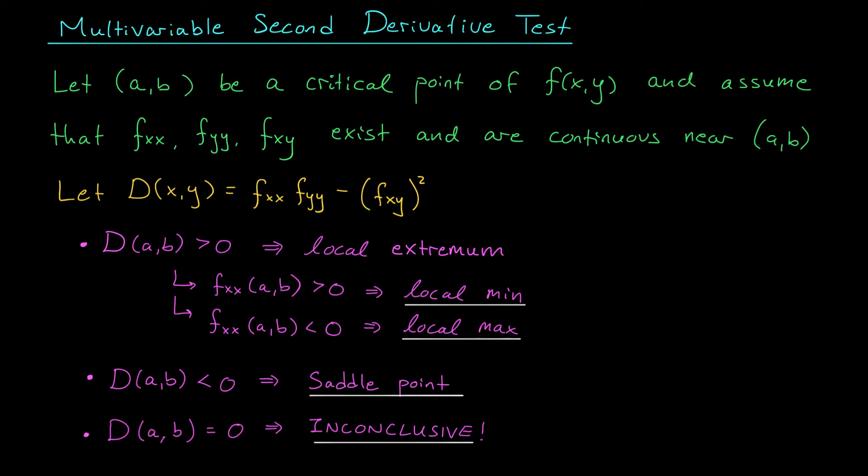Now at this point in the calc 1 version of this test, you would have looked at the sign of your second derivative at the critical point (a,b). Well, now we don't have just one second derivative. We have several. Turns out, though, there's a way that you can combine these second derivatives to get a new function d.